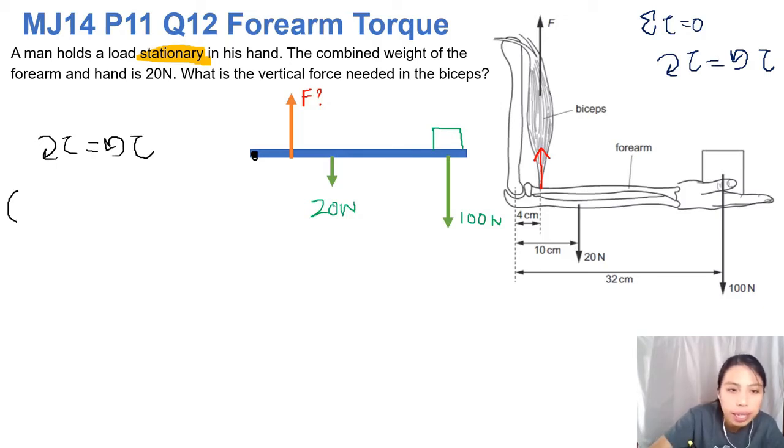Let me just make it color coded. 20 newtons times how far is it away? Check and see: 10 cm. Ah, cm, let's change it to meters, so 0.1 meters. What else? Aha, there's another one, the 100. So 100 newtons from the load, the box they're trying to carry. And how far is the entire forearm? 32 cm, so 0.32.